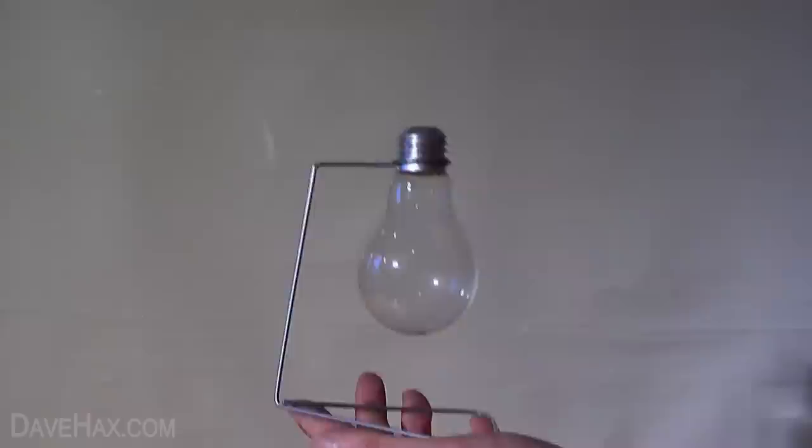And there we have it, our simple light bulb vase. But if you want to make it really cool we can actually make it light up. And to do this we're going to use an LED keyring.